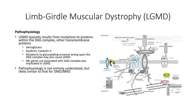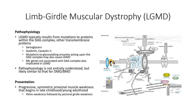The mechanism by which other gene mutations lead to limb-girdle muscular dystrophy is not as well understood. Mutations in lamin A, an intermediate filament involved in stabilization of the nuclear envelope, are associated with an autosomal dominant form of the disease, but the precise mechanism by which this occurs is not well understood.